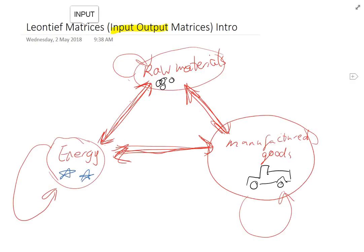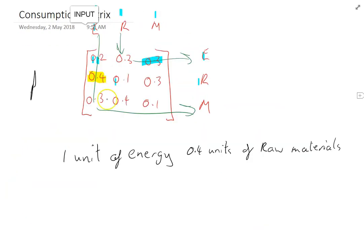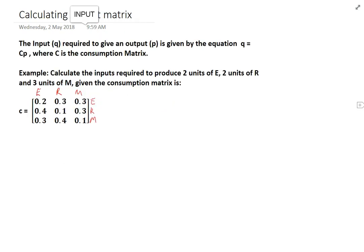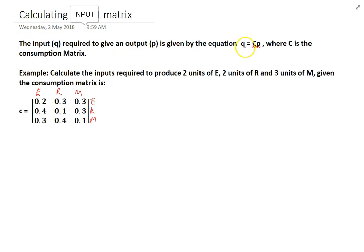We've talked about input-output matrices and consumption matrices. Now we need to do a calculation. The important formula is: the input q required to give an output p is given by the equation q equals Cp, where C is the consumption matrix. So input equals the consumption matrix times the output.